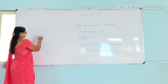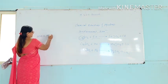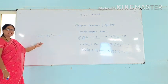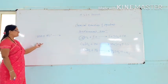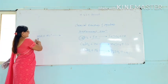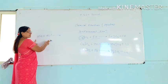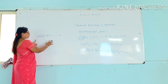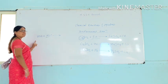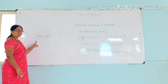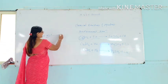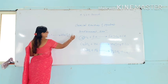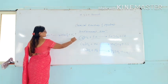A metal reacts with dilute acid. In this type of reaction, displacement occurs — the metal reacts with the dilute acid. Hydrogen is separated and hydrogen gas is produced.